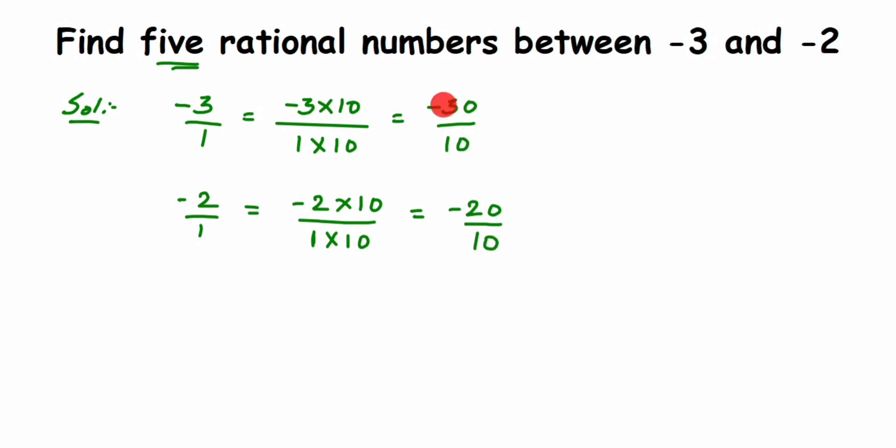Between minus 30 and minus 20, we have many numbers: minus 29, minus 28, and so on up to minus 21. From those we can pick any five rational numbers. If you choose 6 instead of 10 you get exactly five; if you take 20 you get many more. The gap will be larger — it's completely up to you.